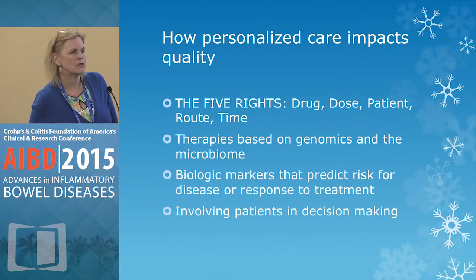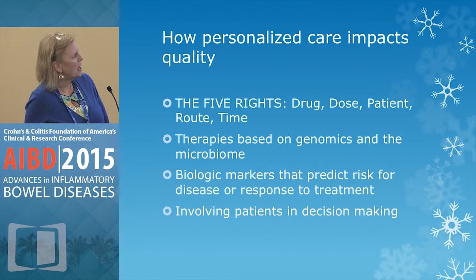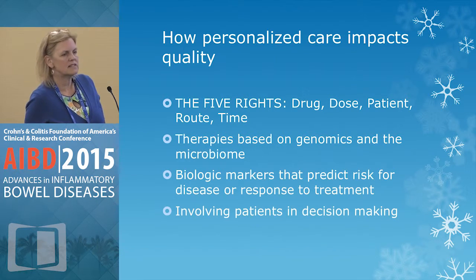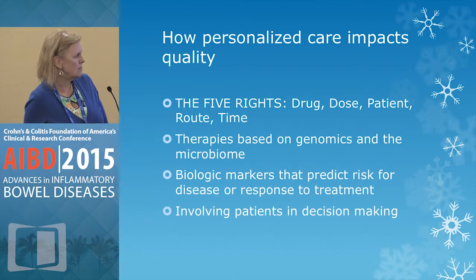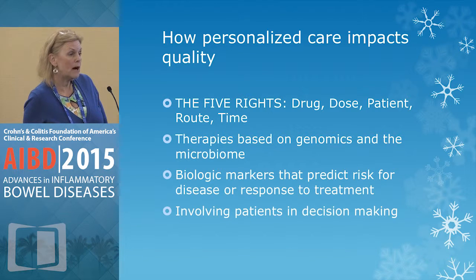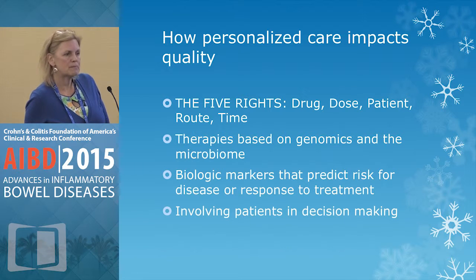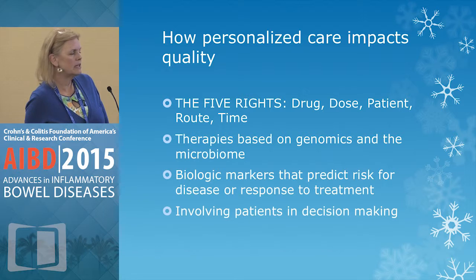This has a direct correlation with quality of care. A nice framework to remember when seeing patients is the five rights: the right drug, the right dose, the right patient, the right route, and the right time. Therapies should be based on genomics, the microbiome, and biological markers that predict risk for disease or response to treatment, and last but not least, really involving patients in a shared care model.